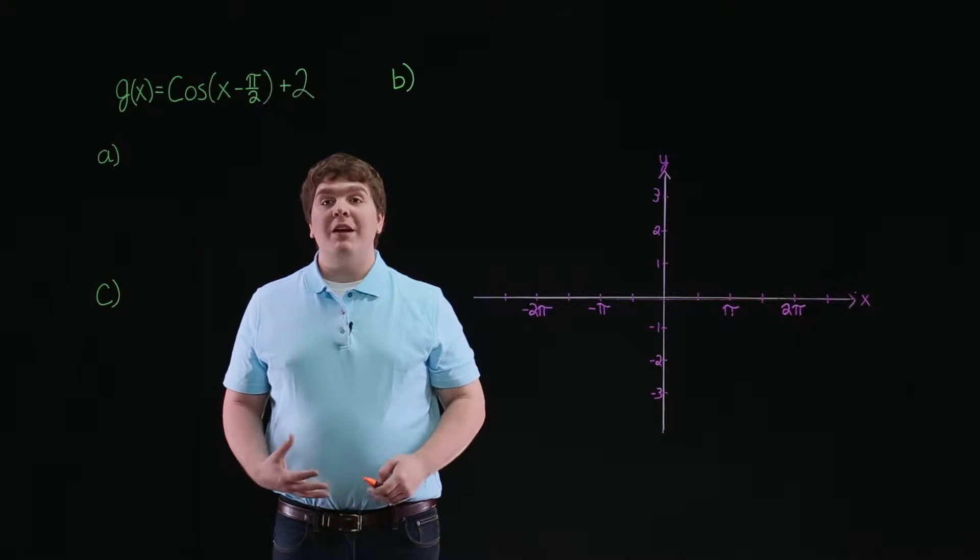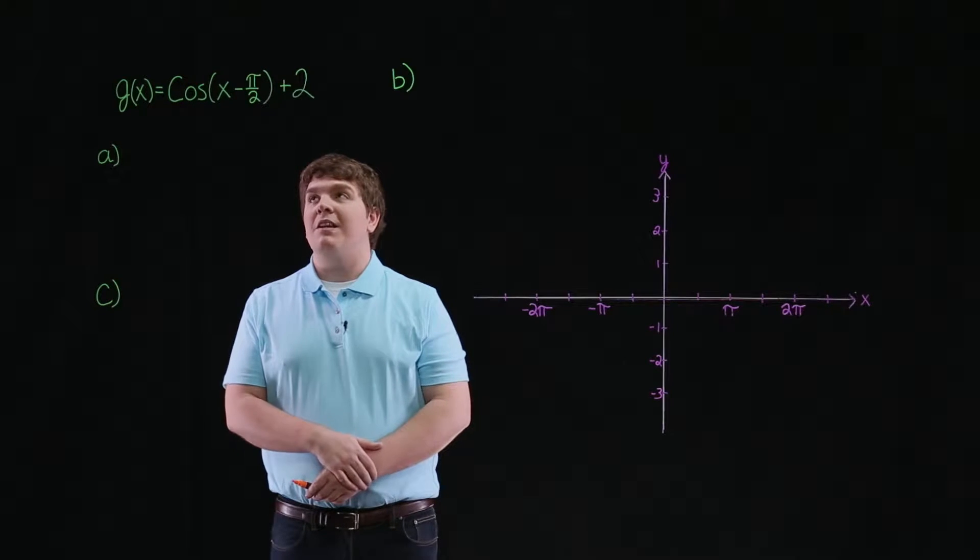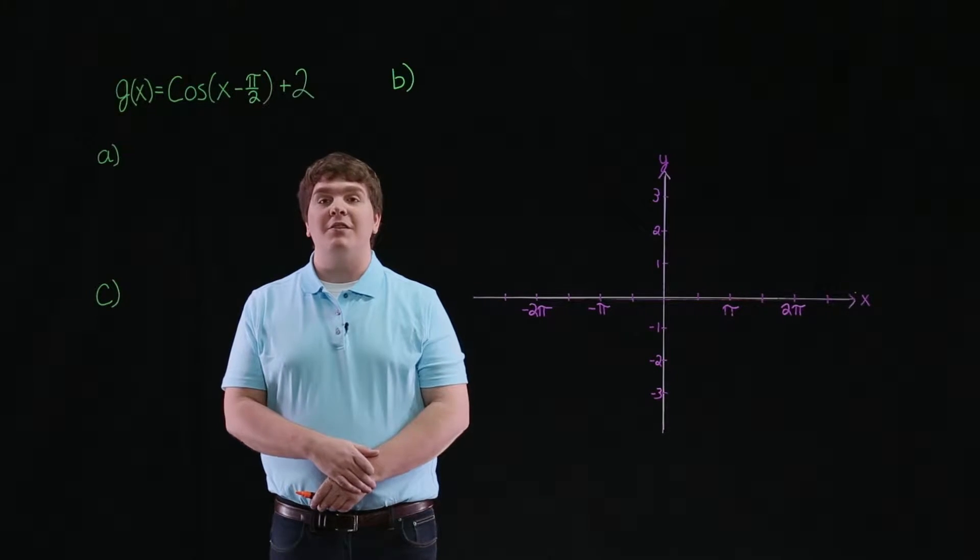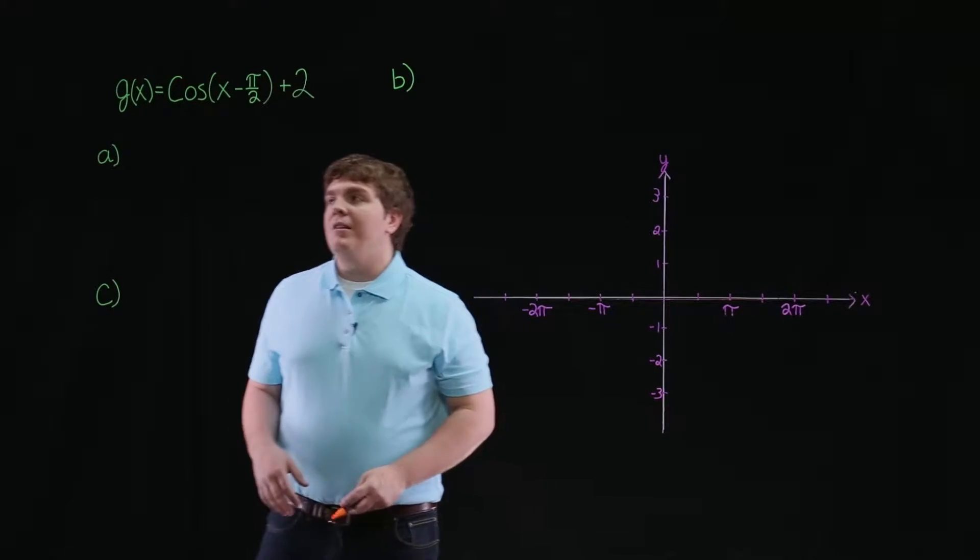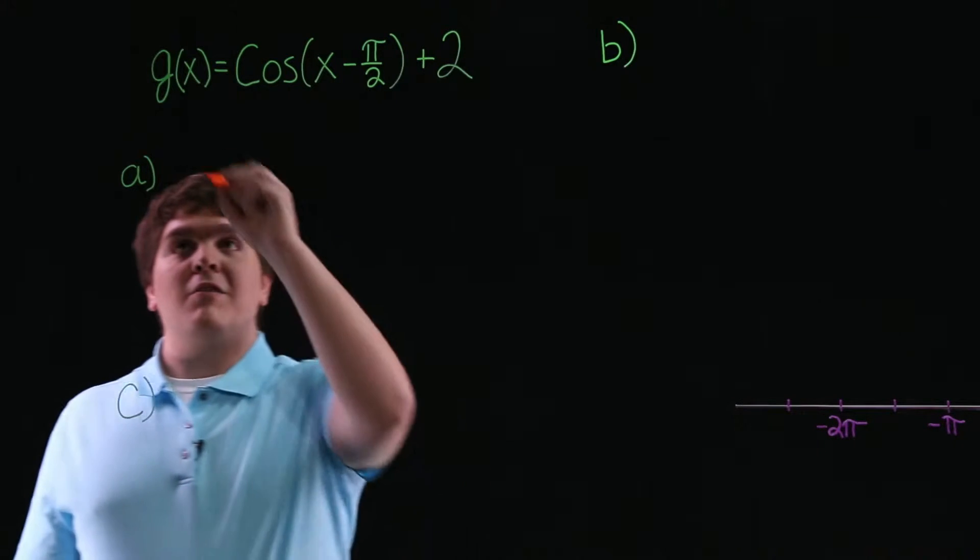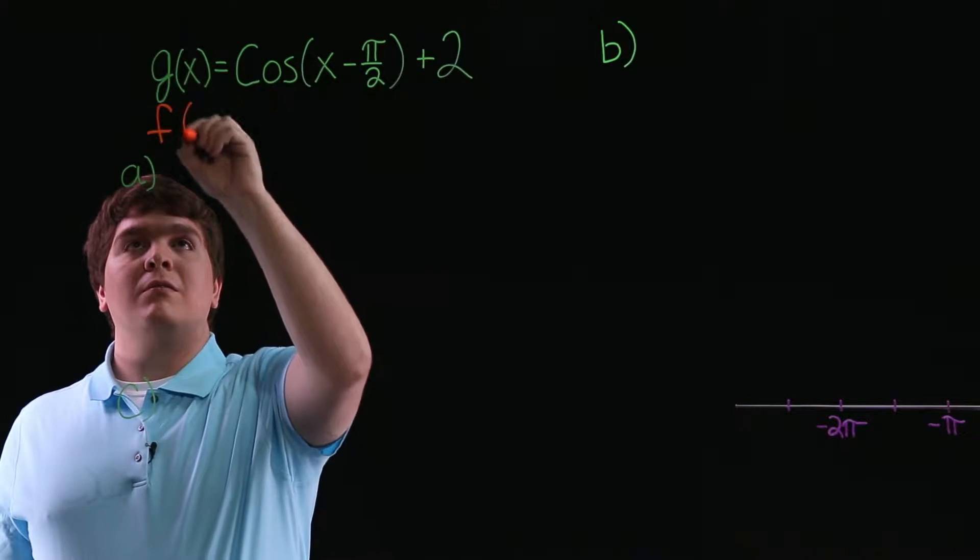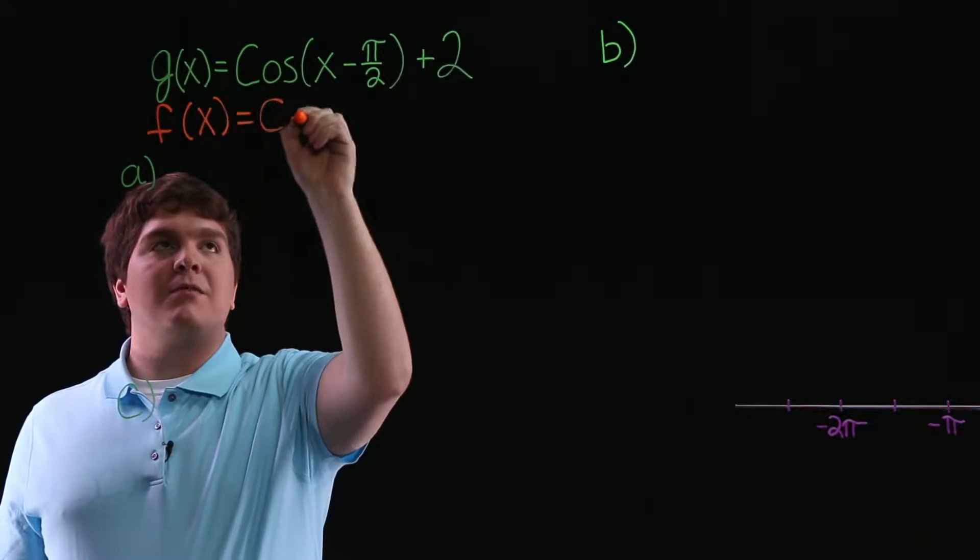Hello, I'm Gabe. For this problem, we're asked to consider the function g of x equals cosine of x minus pi over 2 plus 2. This function is related to the parent function f of x equals cosine of x.